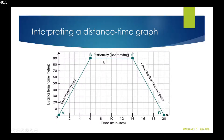Where we have a flat line, as seen from B to C, the object is stationary or not moving. And where we have a downward slope or negative gradient, we are going back to the starting point.